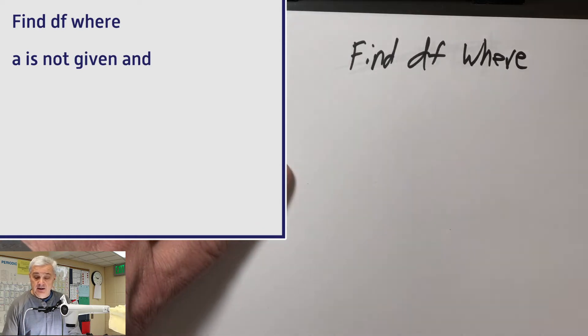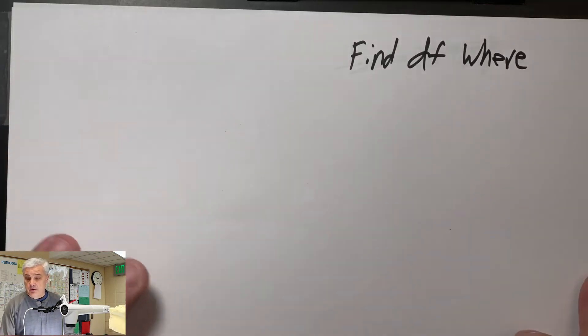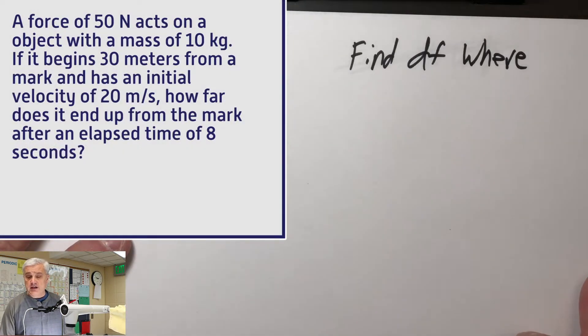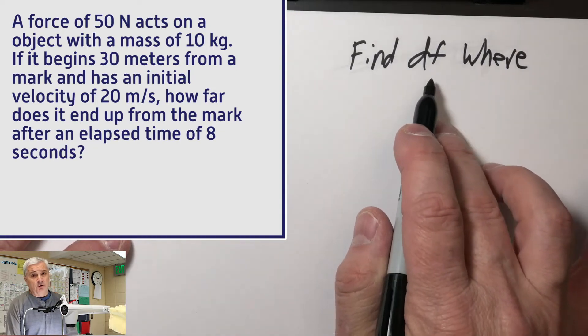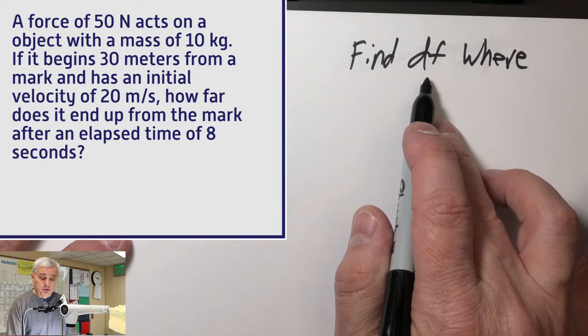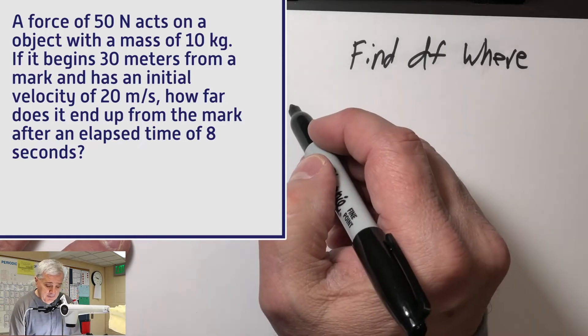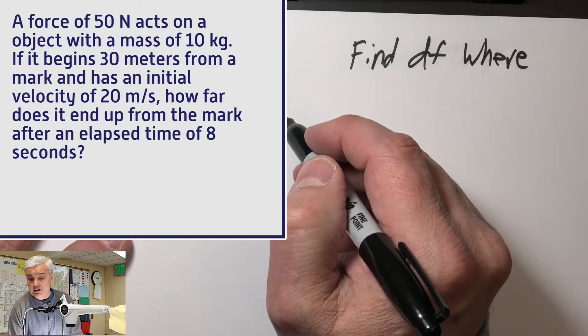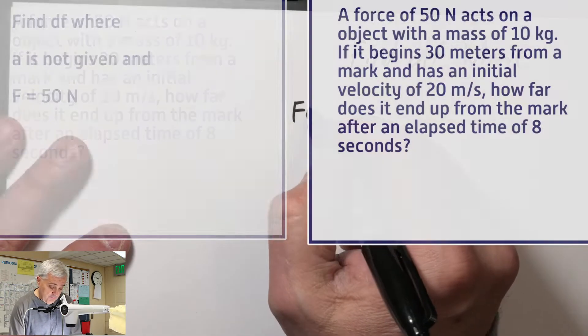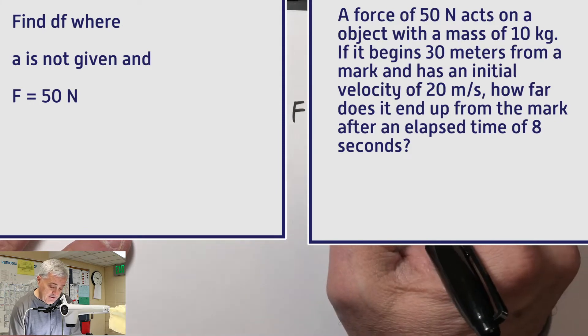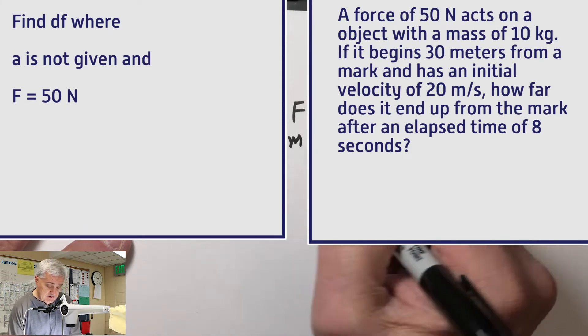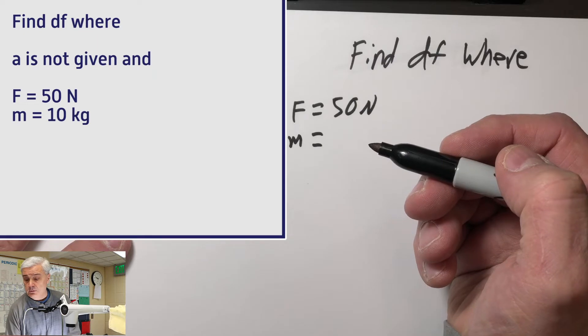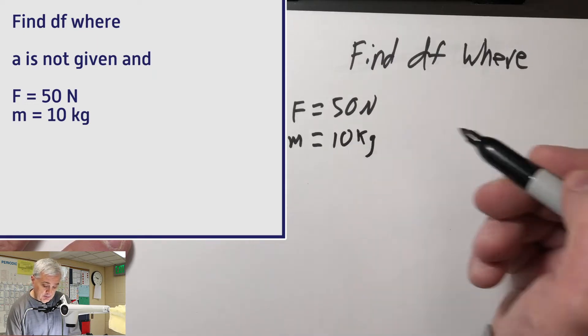So now let's collect the variables from the problem. I've got a force and a mass. Now I know that the force and mass do not directly go with d sub f, but I'm going to write them down anyway. It says the force is 50 newtons, force equals 50 newtons. Mass equals 10 kilograms.